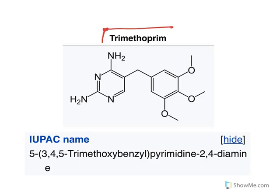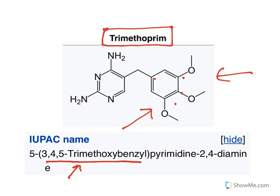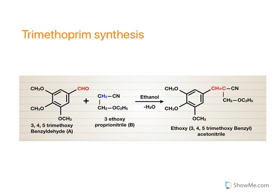The structure of trimethoprim: it has a 3,4,5-trimethoxybenzyl substitution — at positions one through five, a trimethoxybenzyl group is present. The ring is pyrimidine, and at the second and fourth positions of the pyrimidine, two amino groups are present. The IUPAC name is 5-(3,4,5-trimethoxybenzyl)pyrimidine-2,4-diamine.